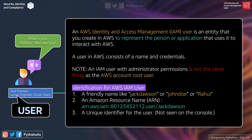An AWS Identity and Access Management user is an entity that you create in AWS to represent the person or application that uses it to interact with AWS. An IAM user consists of a name and credential by which they can log into AWS. An important point: an IAM user with administrator permissions is not the same as the AWS account root user. When we created the AWS account, we got the root user, then created a user with admin rights by attaching an AWS administrator policy.